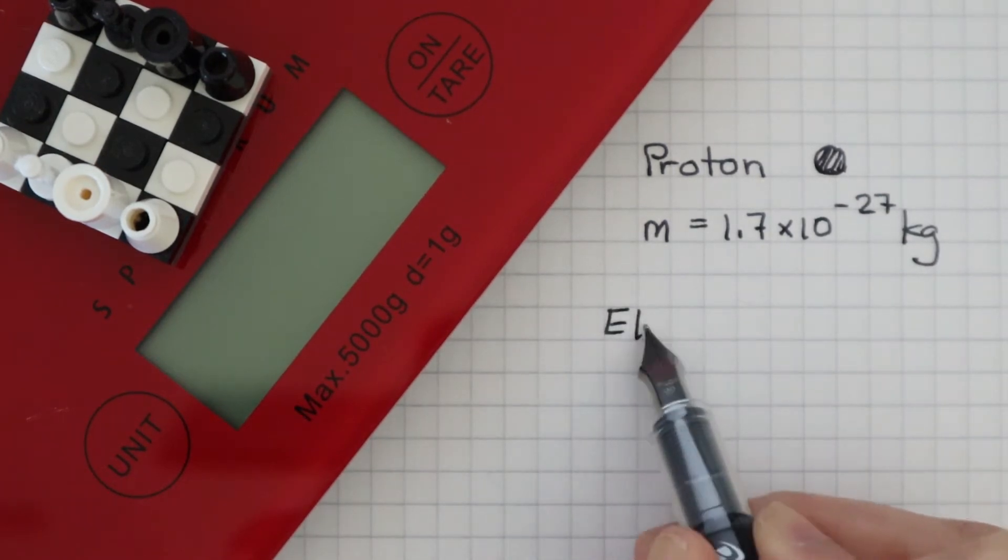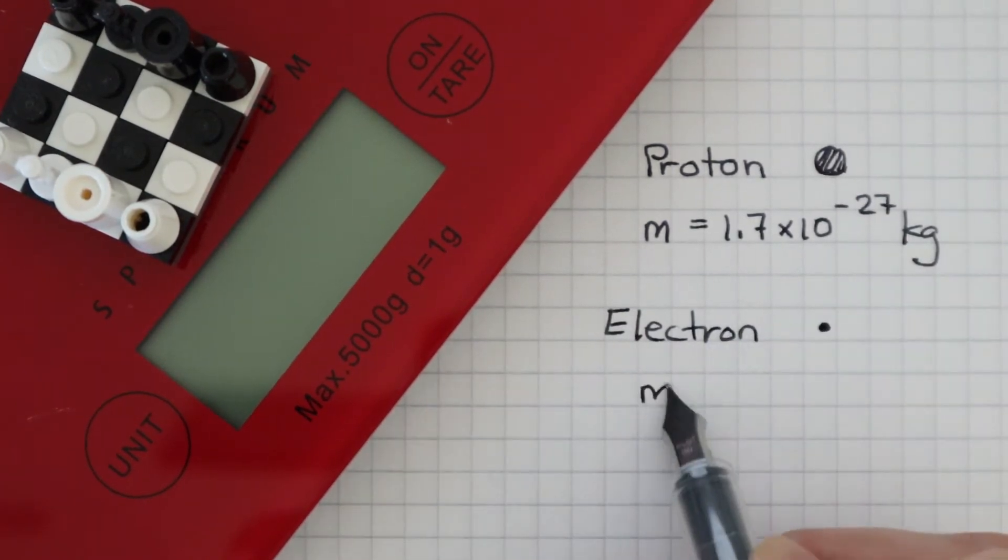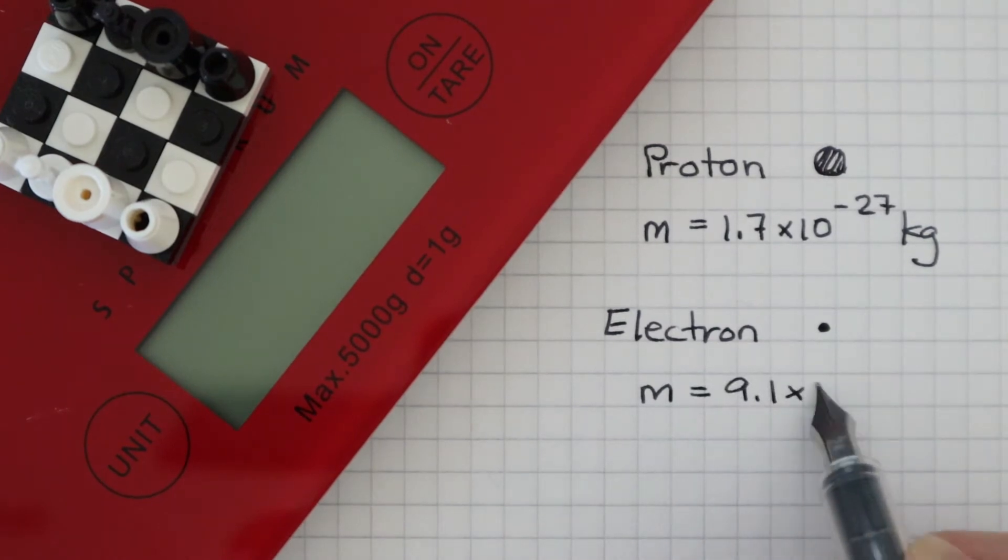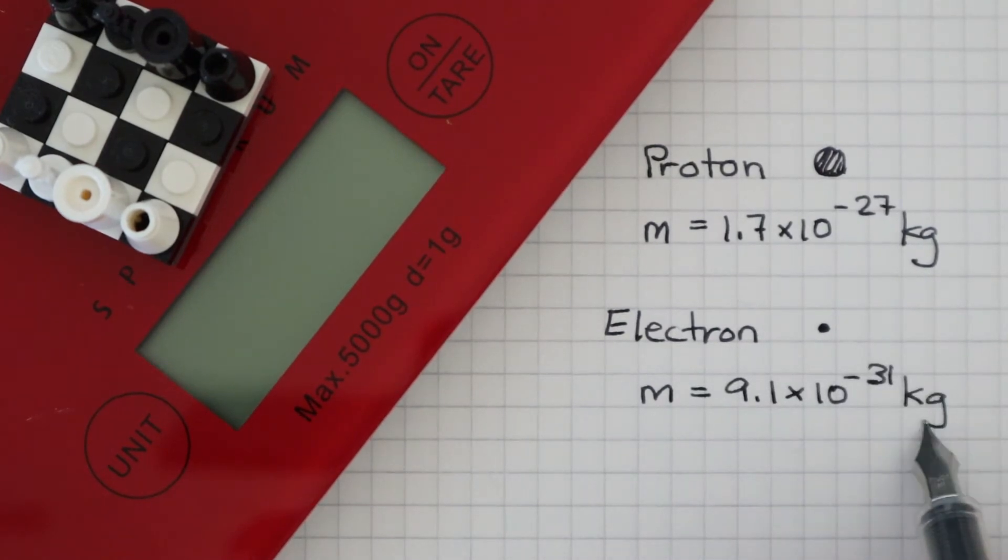An electron has an even smaller mass. It has a mass of 9.1 times 10 to the power of minus 31 kilograms.